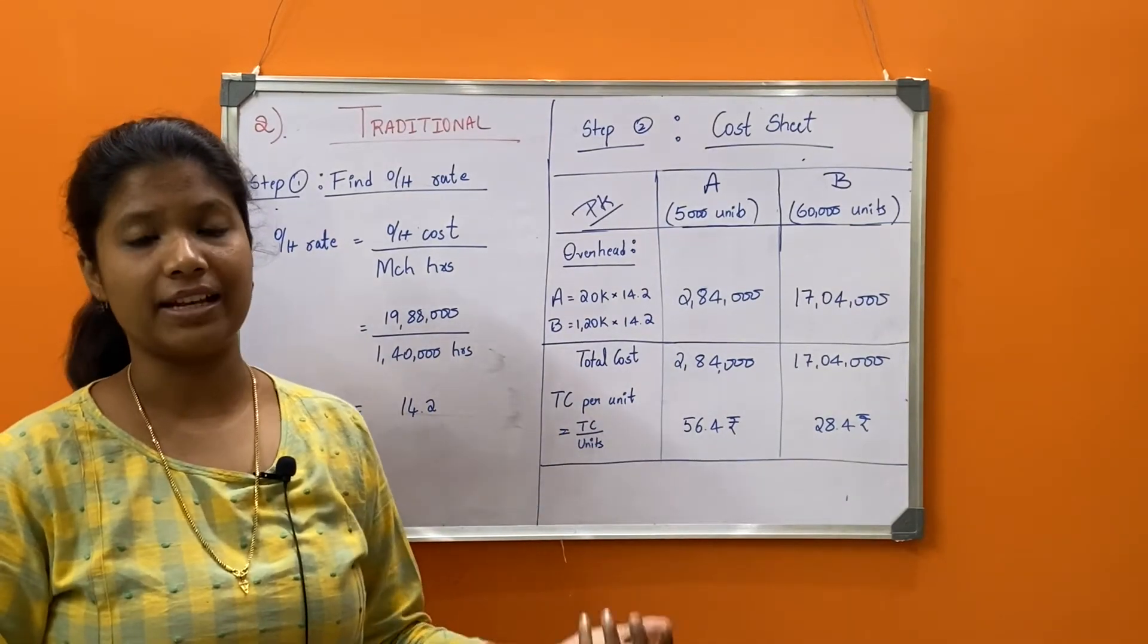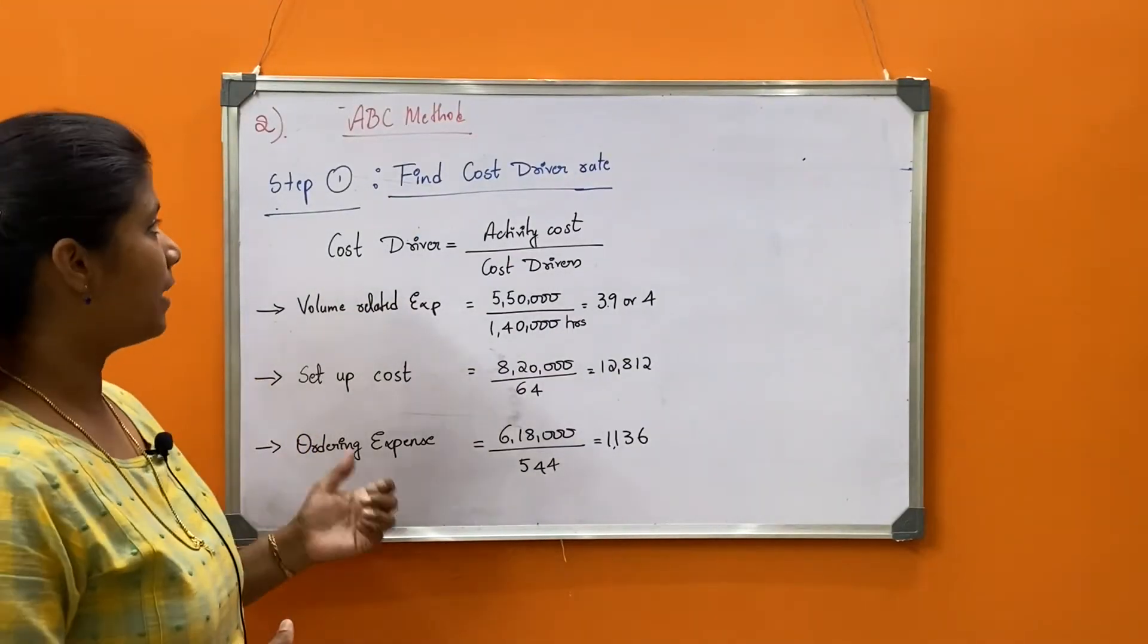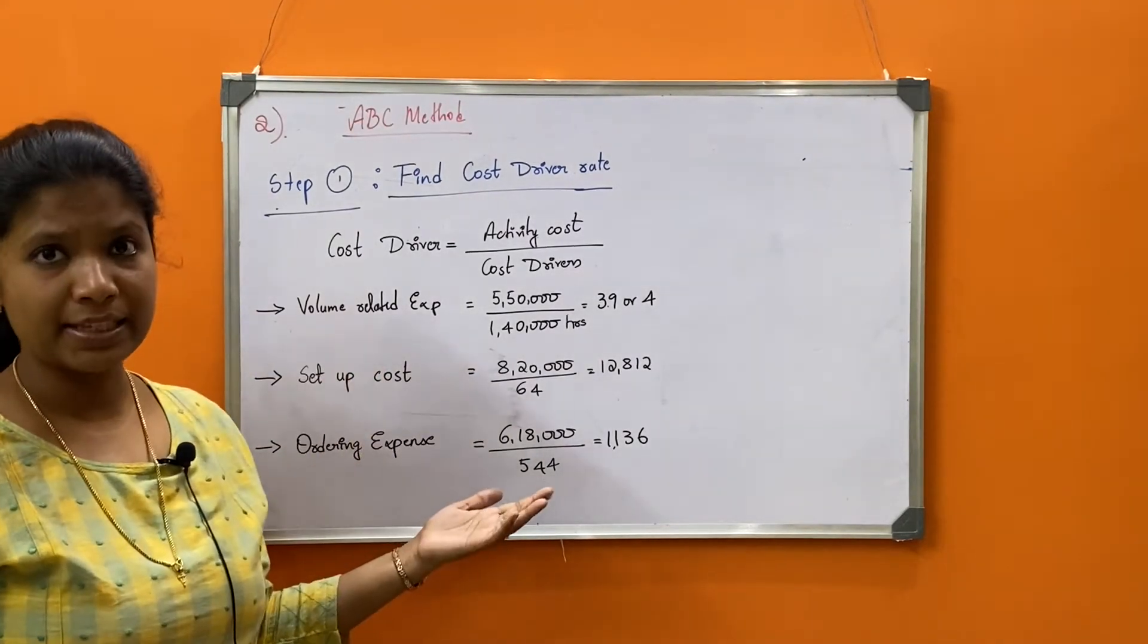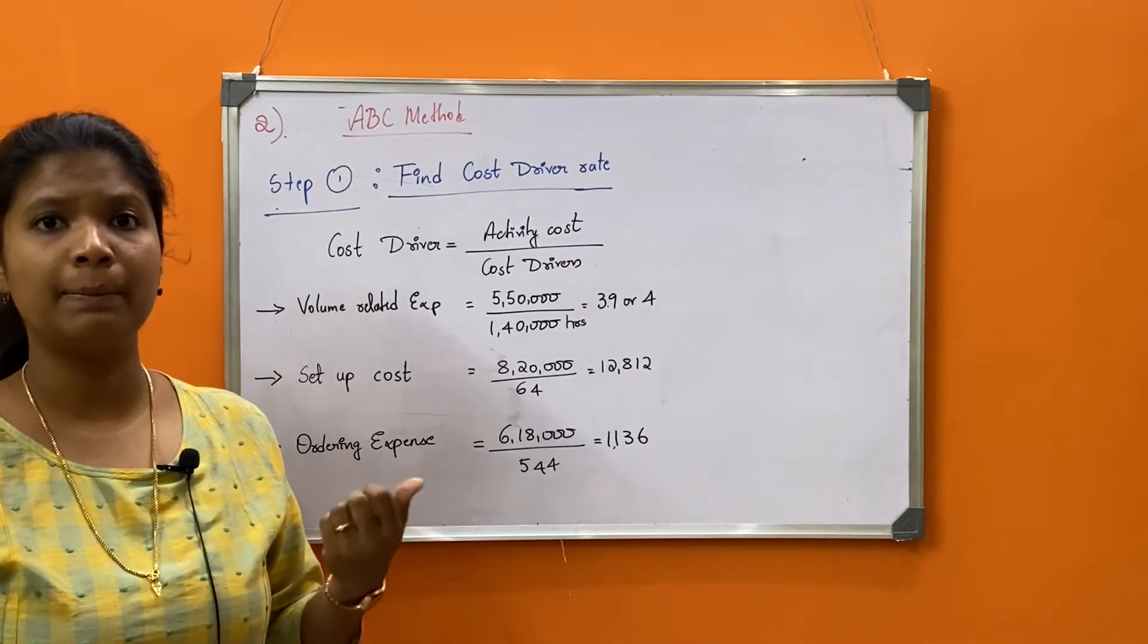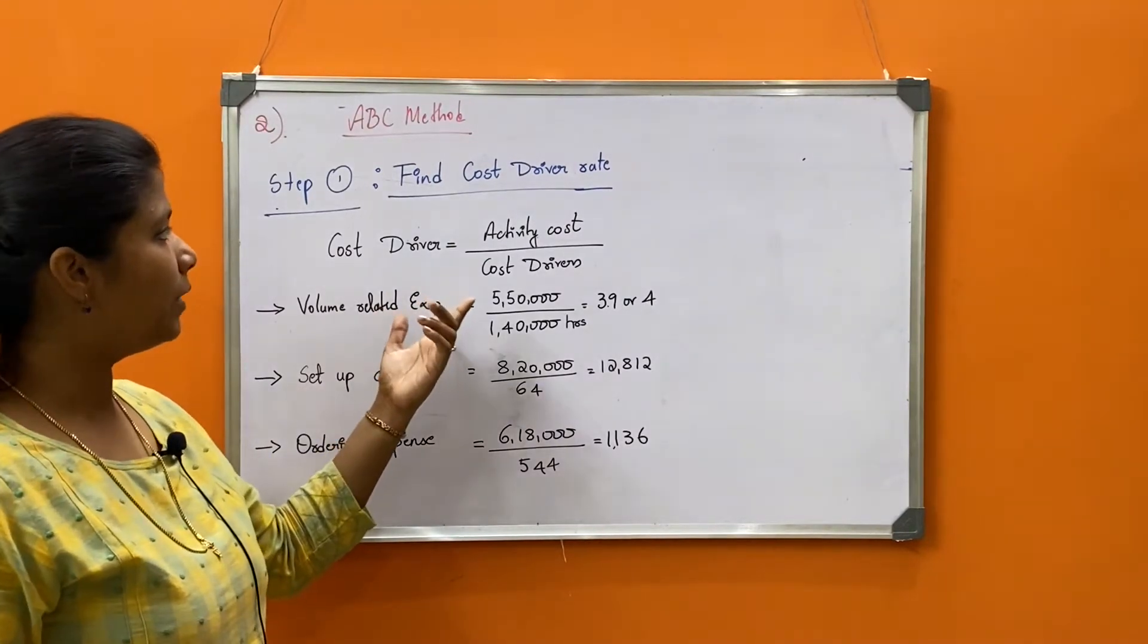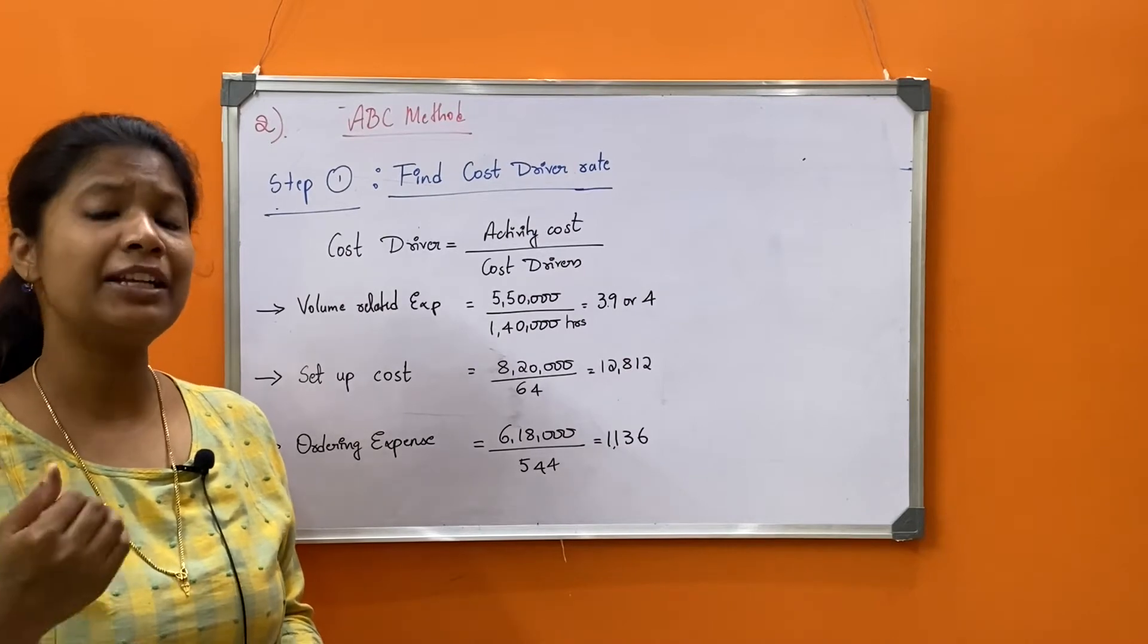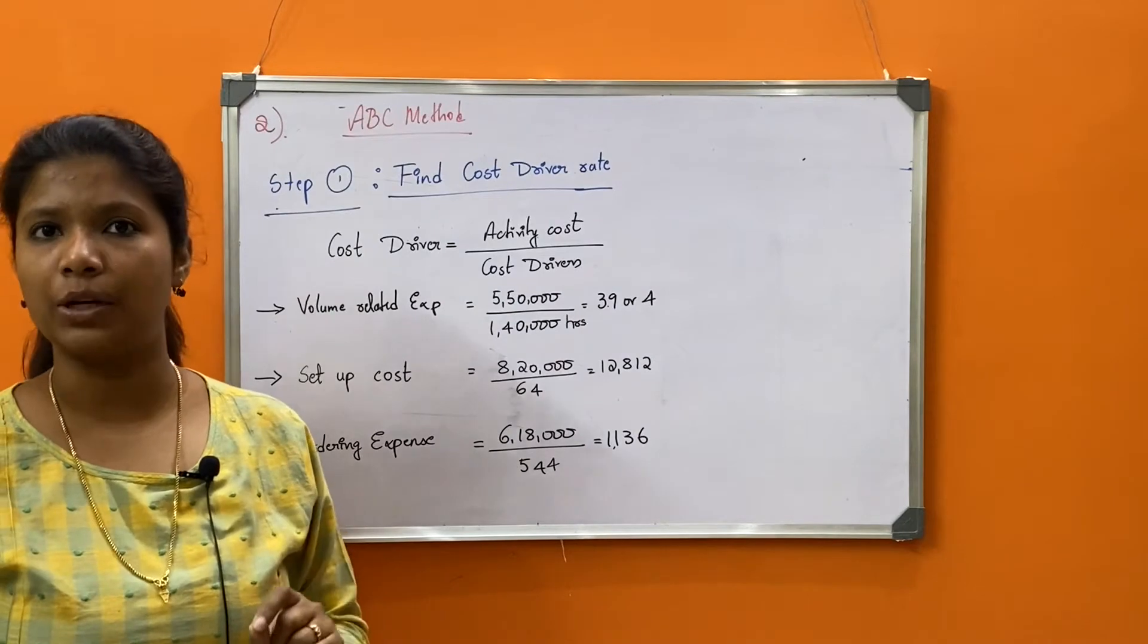Now let's move on to the second method, ABC method of costing. Step one is find out the cost driver rates. The question gives us details about volume related expenses, cost for setup, and expenses related to purchase requisitions or orders. The formula here is activity cost - the total cost incurred by the activity - divided by the cost drivers. Both these aspects will always be given in the question.